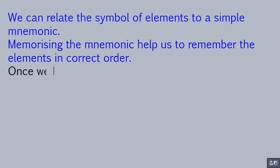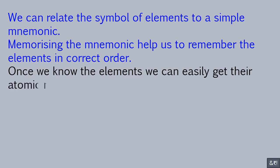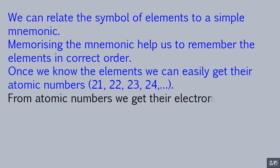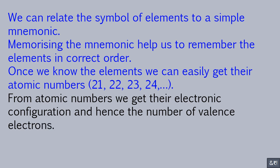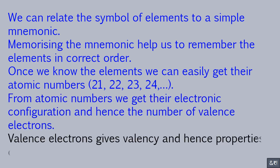Once we know the elements we can easily get their atomic numbers: 21, 22, 23, 24, etc. From atomic numbers we get their electronic configuration and hence the number of valence electrons. Valence electrons gives valency and hence properties of that element.